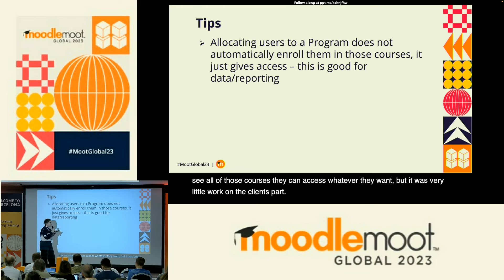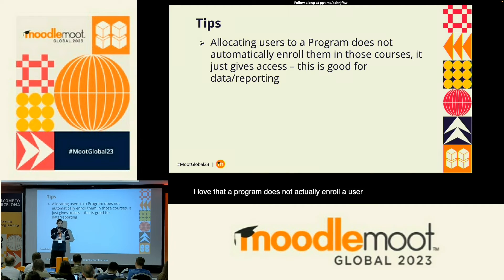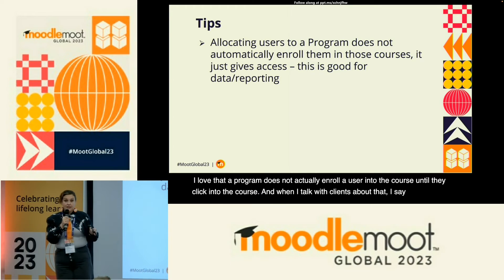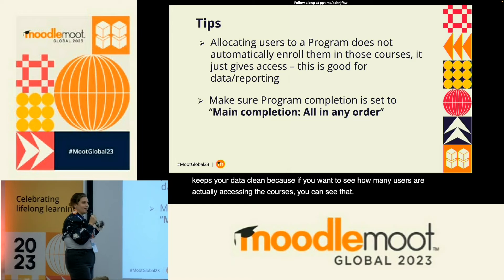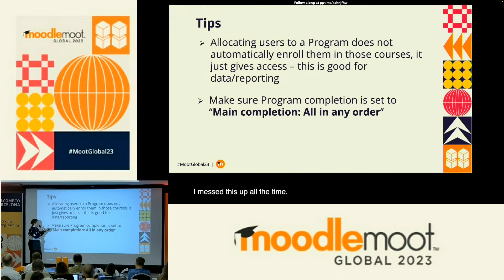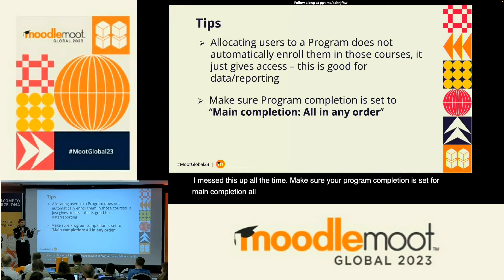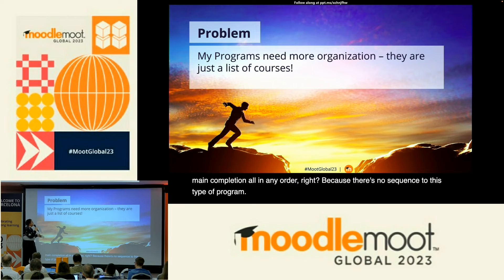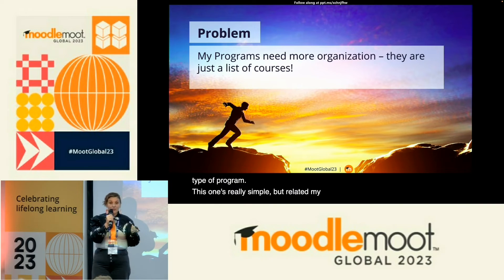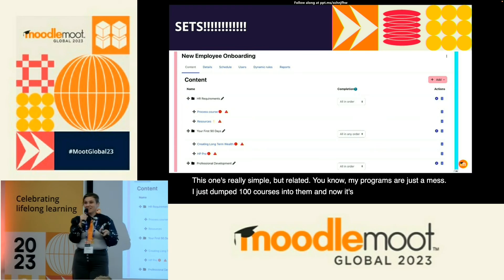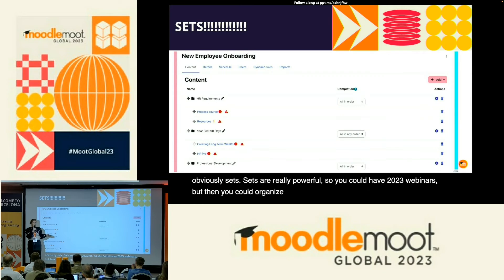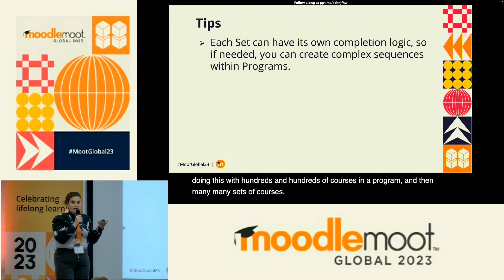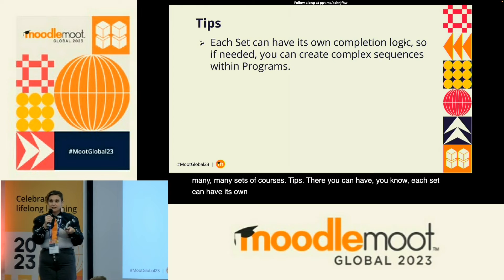A program does not actually enroll a user into a course until they click into it, which keeps your data clean — you can see how many users are actually accessing courses. Make sure your program completion is set for 'main completion all in any order' since there's no sequence to this type of program. And for organizing courses within programs — sets are really powerful. You could have 2023 webinars organized thematically in sets. Each set can have its own completion logic, so you can get really complex when using sets within programs.